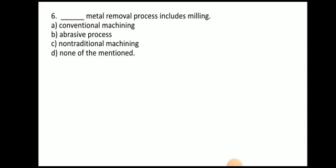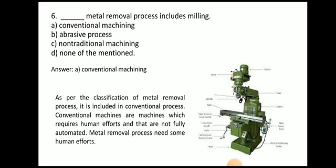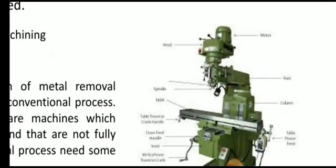Next question: which metal removal process includes milling — conventional machining, abrasive process, non-traditional machining, or none of the mentioned? The answer is conventional machining. Milling is a category of the conventional machining process. Here you can see the vertical milling machine.